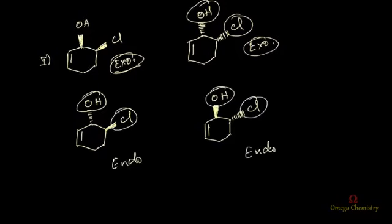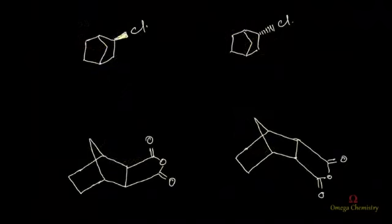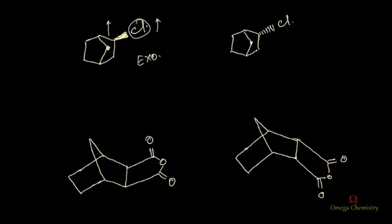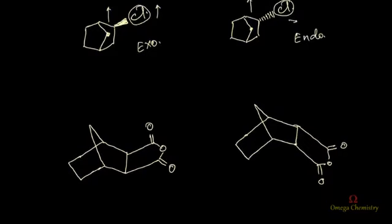Now look at these compounds. This is the bridgehead carbon — I told you this carbon is pointing above the plane, and this chlorine is also pointing above the plane, so this is exo. Whereas here, this bridged carbon is pointing above the plane and this chlorine is below the plane, so we call this endo.